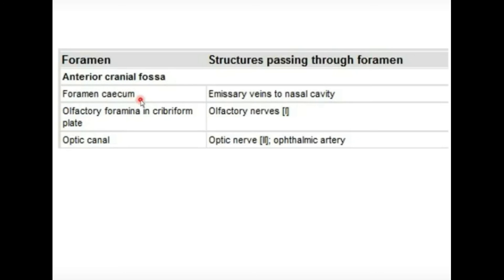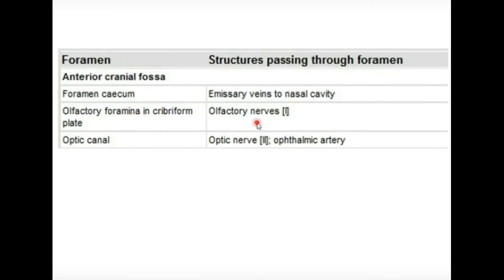The foramen cecum in the anterior cranial fossa communicates with the nasal cavity and passes emissary veins, which basically communicate the superior sagittal sinus with the nasal cavity. The olfactory foramina present in the cribriform plate — the reason it is named 'cribriform' is that it has very small, minute holes — and through these foramina pass the olfactory nerve fibers. The olfactory nerve is our first cranial nerve, responsible for olfaction — the sense of smell.